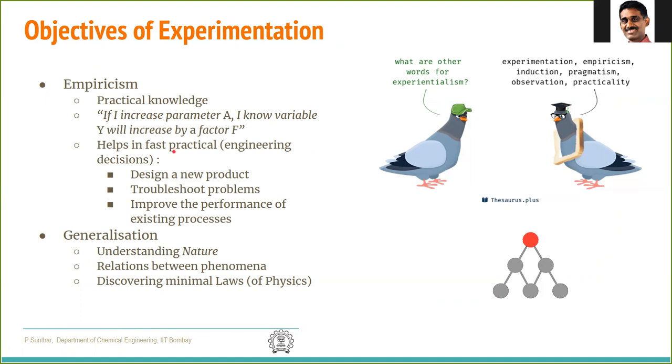For example, even without knowing the underlying physics, an engineer can know that if I increase a parameter A, I know that the variable Y will decrease by a factor F. This is very helpful in taking quick decisions. For example, in designing a product to troubleshoot industrial problems and to improve the performance of existing processes. Equally important aspect of experimentation is to be able to understand nature. Relating different phenomena and generalizing to discover minimal laws of physics. Unless we have carefully performed experiments, we would not be able to test new hypothesis.